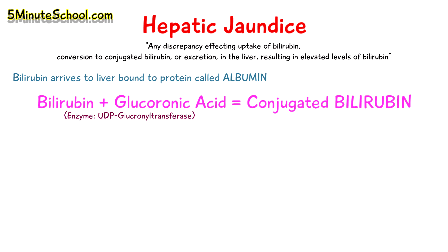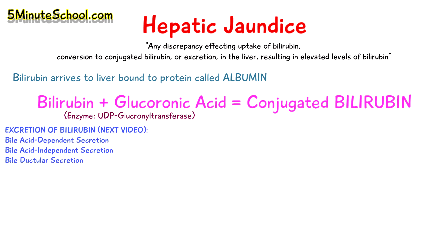If there's also an issue with the excretion of bilirubin, this is also considered within the classification of hepatic jaundice because it will lead to accumulation of bilirubin. There are three mechanisms involving excretion of bilirubin: bile acid-dependent, bile acid-independent secretion, and bile ductular secretion. A separate video will cover how this occurs. The congenital causes of hepatic jaundice include any discrepancies affecting the arrival of bilirubin, the conversion to conjugated bilirubin, and the excretion of bilirubin.